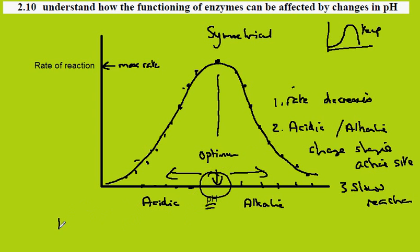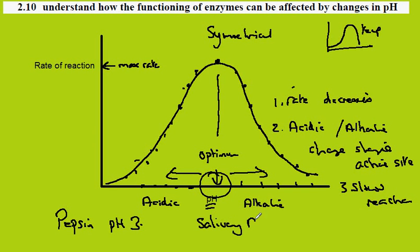For instance, in the stomach there's an enzyme called pepsin, and the optimal pH for pepsin is pH 3. An example of another enzyme which works at pH 7 would be salivary amylase, which operates at approximately pH 7.